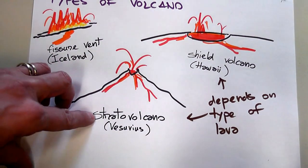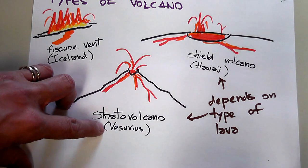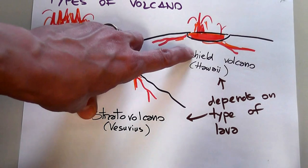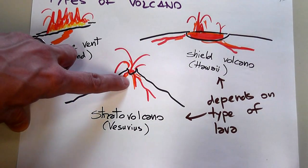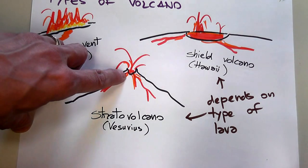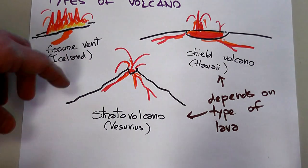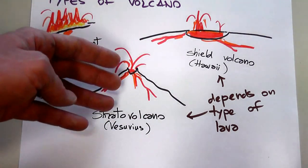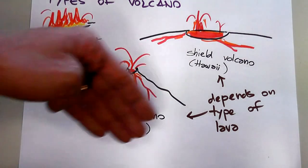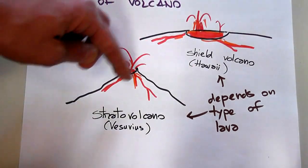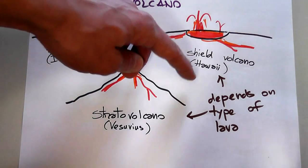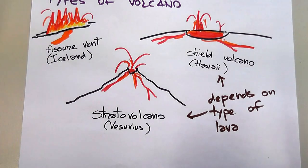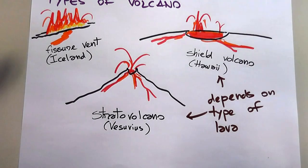Your typical volcano is what we call a stratovolcano — for instance, like Mount Vesuvius in Italy. In this case, the lava is not as fluid as in the case of shield volcanoes. Stratovolcanoes build up eruption after eruption in a typical conical shape, and they tend to be more tall than wide. The difference in these two shapes is really given by the type of lava, and the type of lava is given by its chemical composition, namely the amount of silica inside the lava.